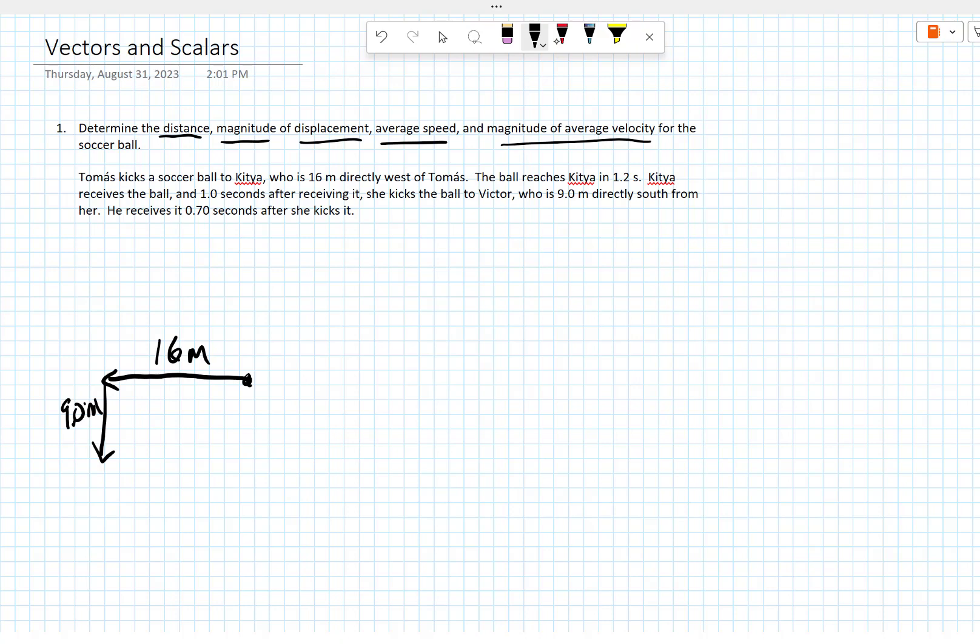We need the distance, displacement, average speed, and average velocity. Well, the distance is just the total length of the path. So the distance is just 16 plus 9 is equal to 25 meters.